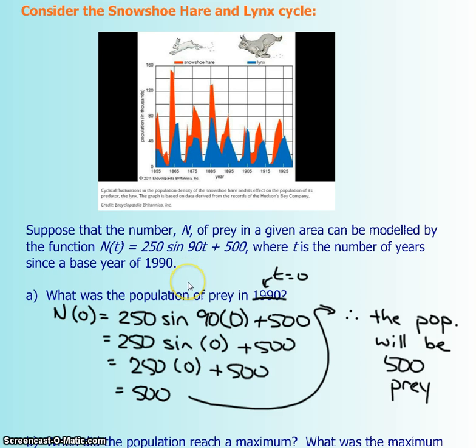So just your basic BEDMAS, you have 250 times sine of all of this and then plus 500 at the end. You're going to do the multiplication first, but before you do the multiplication, you actually need to know what sine of 90 times zero is. So 90 times zero is just zero and sine of zero should be zero. And then the 250 times zero plus the 500 should give you 500. The initial population should be 500 prey.